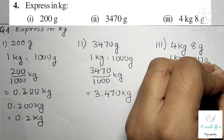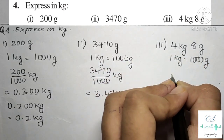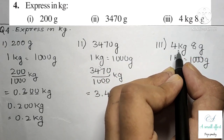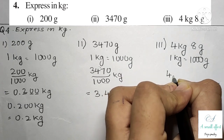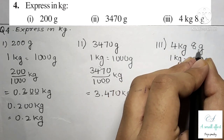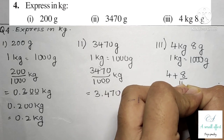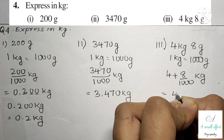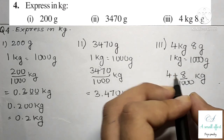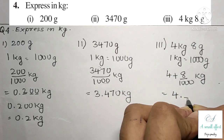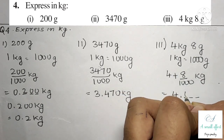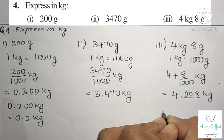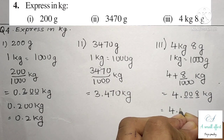Third part is 4 kg and 8 gram. We know 1 kg equals 1000 gram. Since 4 is already in kg, we keep it as 4 and add 8 divided by 1000. There are three zeros but only one digit, so we fill the blanks: 4.008 kg.